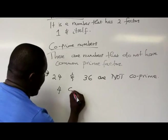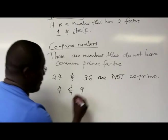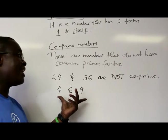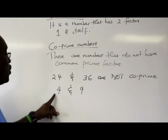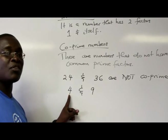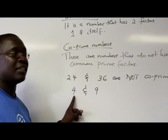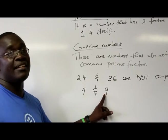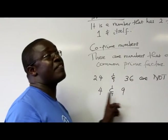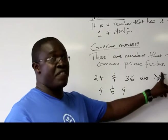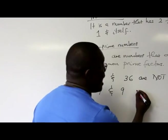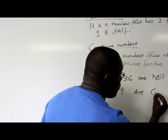What about 4 and 9? Are 4 and 9 co-prime? If you look at the prime factors of 4, it's only 2. The prime factors of 9, it's only 3. So it means these do not have common prime factors. That means that 4 and 9 are co-prime.